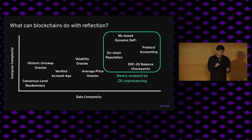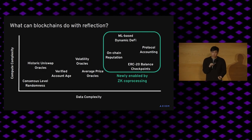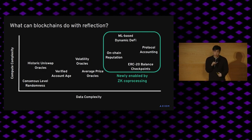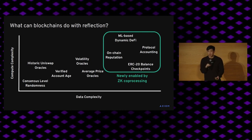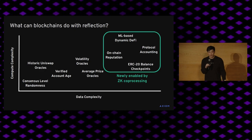One thing I want to note is that the data complexity of an application is actually intrinsically quite tied to its compute complexity. If we offer you access to a huge number of data points, it's very hard to use that without a commensurate level of compute. Similarly, if you're going for an application that does very sophisticated compute — for example, some type of neural network inference — you very likely will have to access quite a bit of data in a trustless fashion to even get the input. At Axiom, we're going after applications in this top-right corner, so if you have any ideas, definitely come talk to me after the talk.